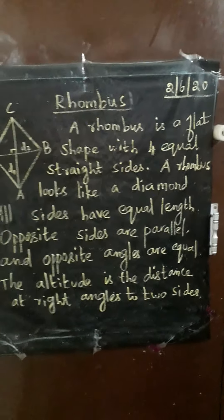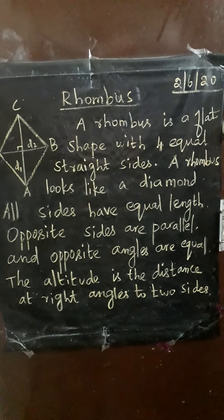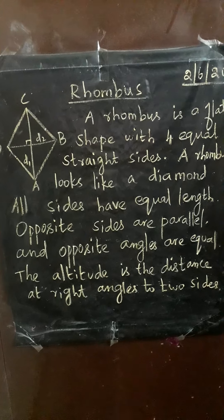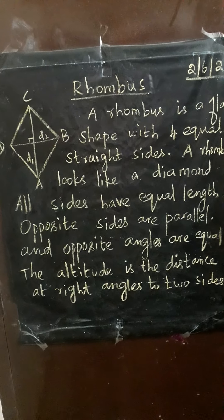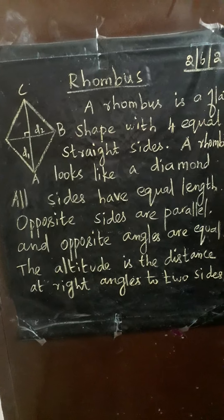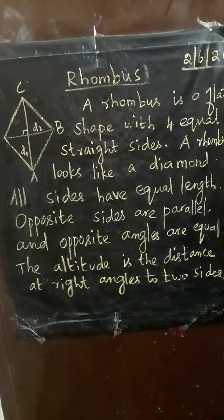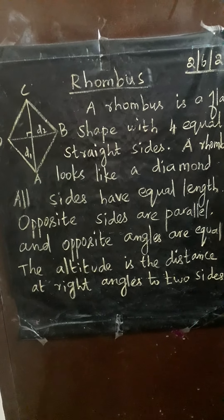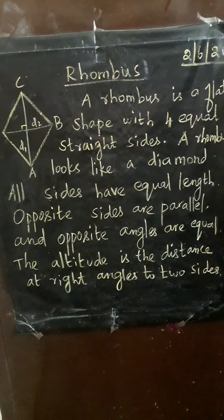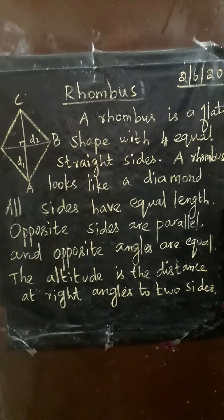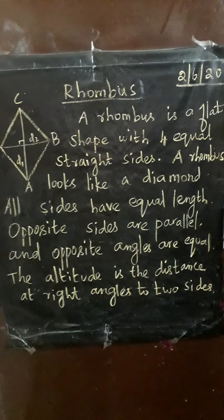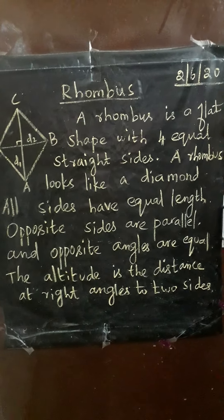A rhombus is a flat shape with four equal straight sides, and a rhombus looks like a diamond. All sides have equal length — that means four sides are equal. Opposite sides are parallel and equal. Opposite angles are equal. Its altitude is the distance between two right angles to two sides.